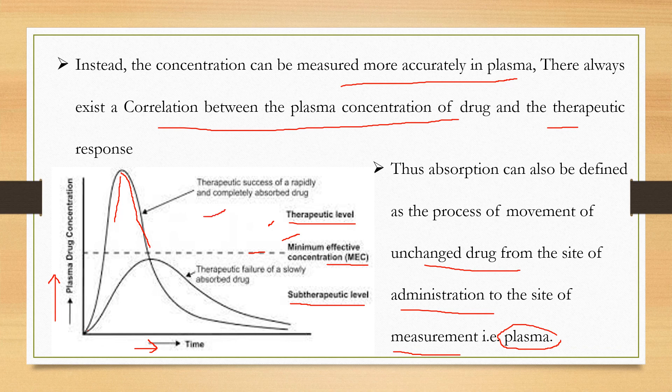Looking at the first drug, its plasma drug concentration level crosses the MEC — so you get a therapeutic effect. This is the therapeutic success of a rapidly and completely absorbed drug. For the second drug, its concentration does not even pass the minimum effective concentration — it stays below — so there is therapeutic failure. If a drug's absorption is slow, it cannot properly achieve the effective concentration and the therapeutic effect is not shown.